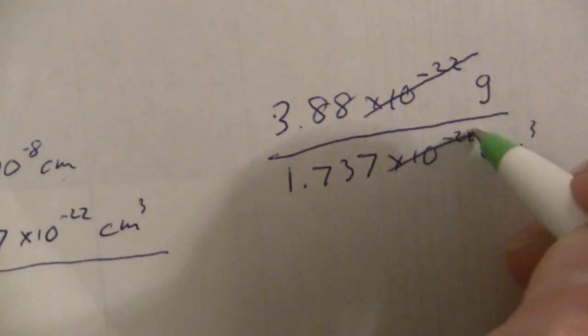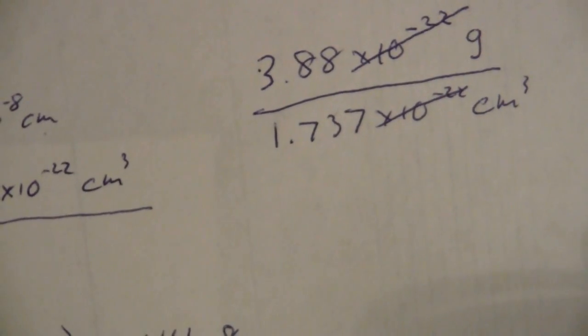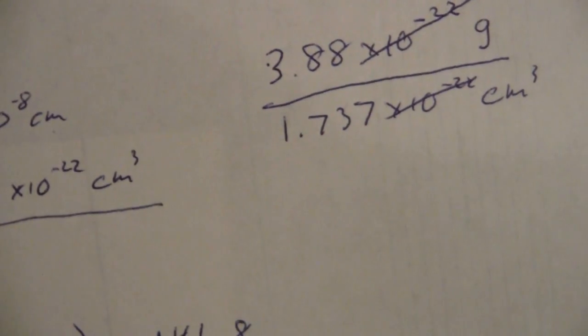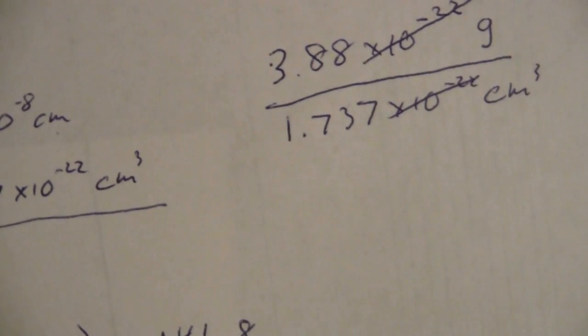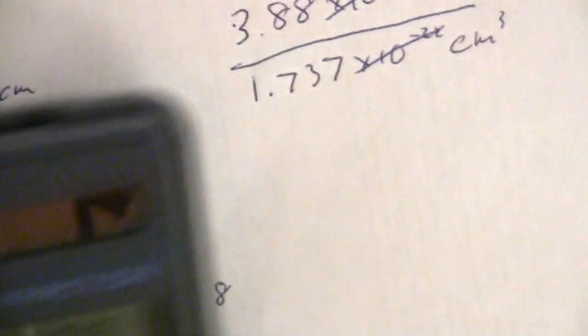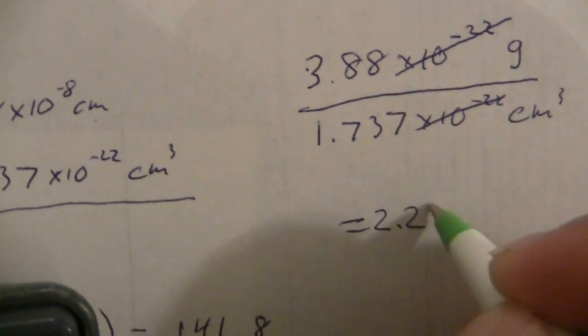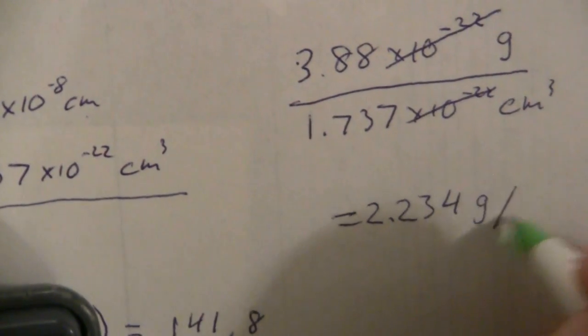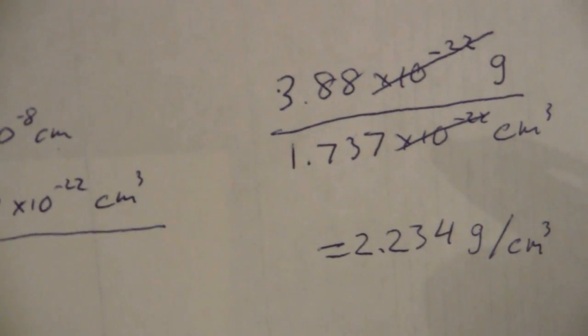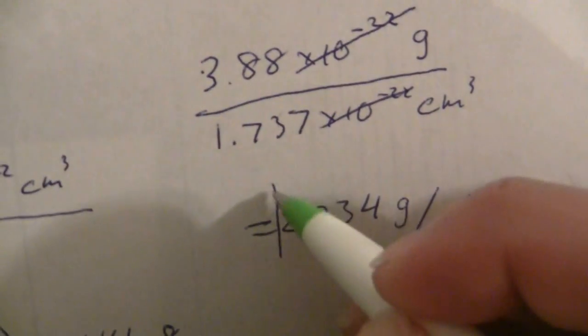The factor of 10 to the negative 22 drops out, and when we divide this, we have 3.88 divided by 1.737, and we get 2.234, grams per cubic centimeter. So this is our calculated density for salt.